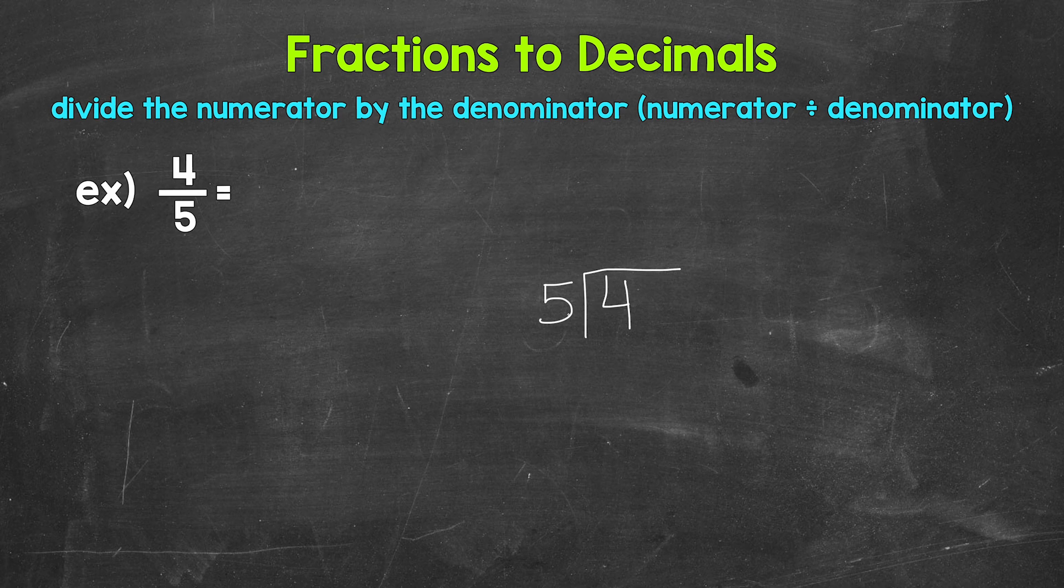And now we can work through the division process. So we have 4 divided by 5. How many whole groups of 5 in 4? How many 5s in 4? Well, we can't do that, so we need a decimal and a zero in order to work through this.